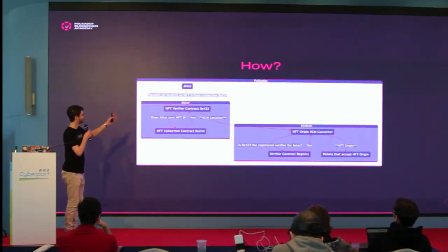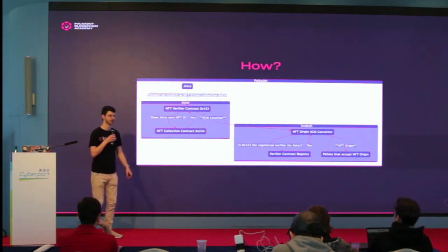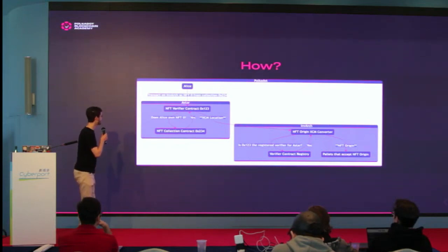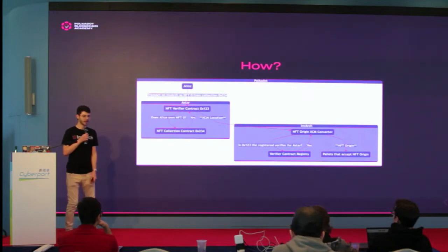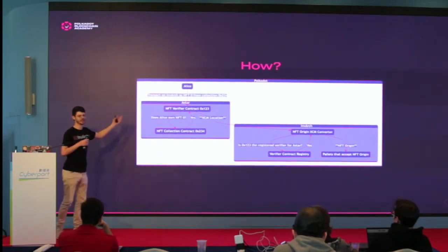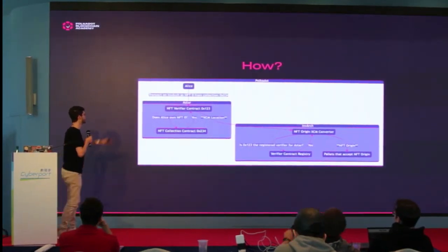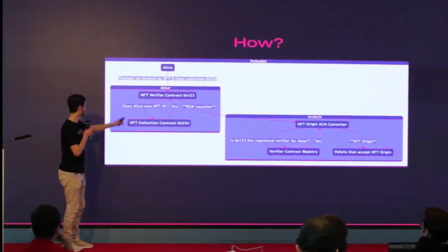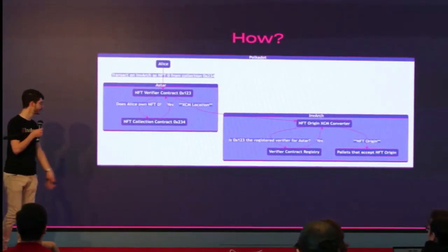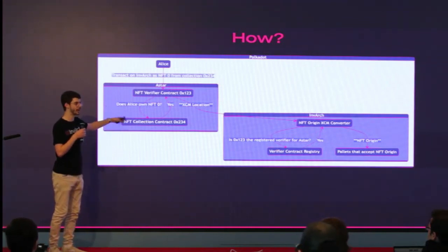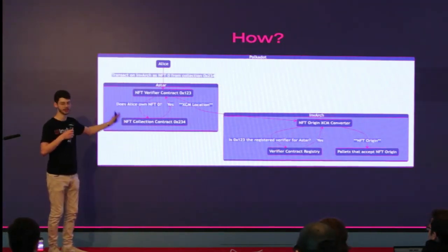Imagine we have NFTs on Astar. We want to do something on Invarch as that NFT and not as Alice. We make a verifier contract on Astar. This verifier contract can receive the NFT ID, collection address, and the information you're trying to send over to Invarch. You call this contract saying: I own NFT zero in contract 0x234. I want to send this message to Invarch and do something as that NFT. The verifier contract asks the collection using ERC standards: does Alice own NFT zero? It replies yes. We build an XCM location structure for that NFT and send a message over to Invarch.